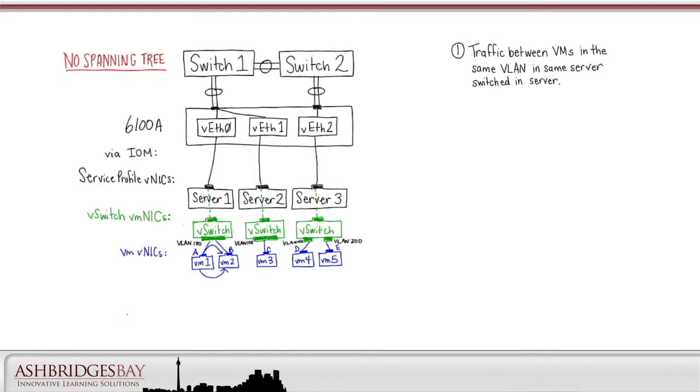Traffic between VMs and the same vLAN on the same vSwitch will be switched by the server. The vSwitch in Server 1 knows about MAC addresses A and B and switches traffic between VM 1 and VM 2.